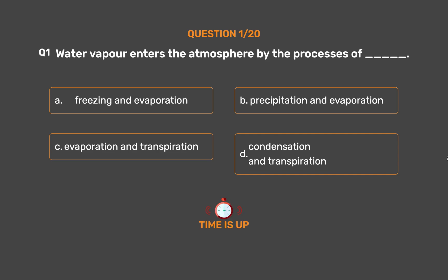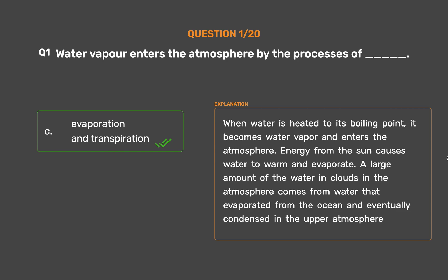The correct answer is Option C: Evaporation and transpiration. When water is heated to its boiling point, it becomes water vapor and enters the atmosphere. Energy from the sun causes water to warm and evaporate. A large amount of the water in clouds comes from water that evaporated from the ocean and eventually condensed in the upper atmosphere.